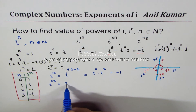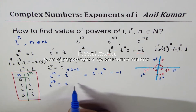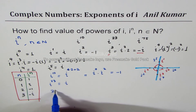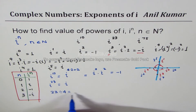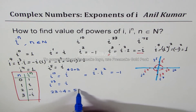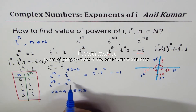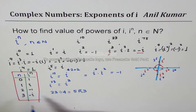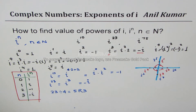i to the power of 23: dividing 23 by 4 gives 4 times 5 with remainder 3. So i^23 is the same as i cubed, and i cubed equals minus i.